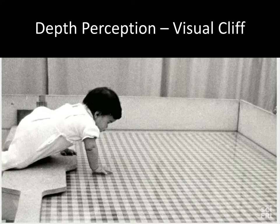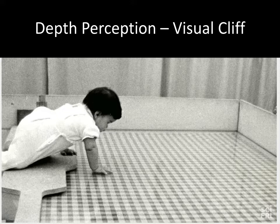Next, we'll talk about depth perception. Can infants process sensory information accurately? This was a question posed by Walk and Gibson in the 1960s when they first conducted the visual cliff experiment. This was designed to provide an illusion of a sudden drop between a horizontal surface and another. There's a video in the next slide to show how this study looks in reality and how it relates to depth perception.